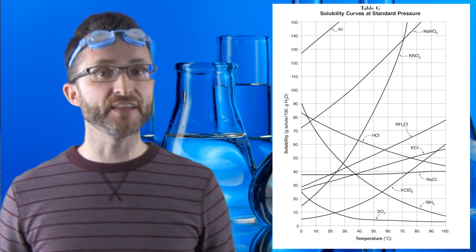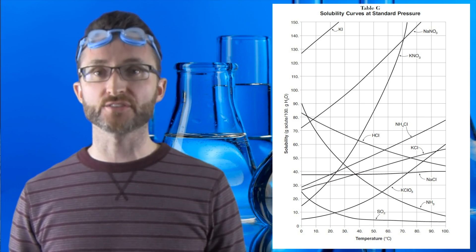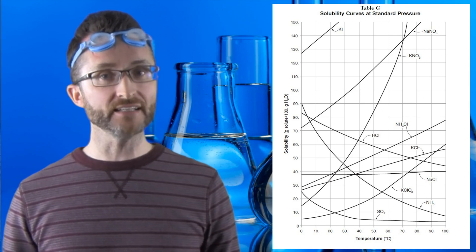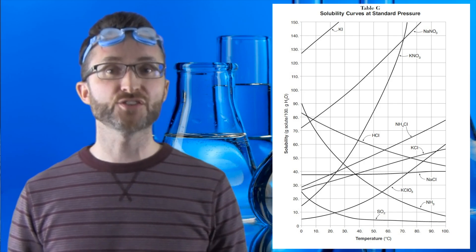If you find that the amount dissolved is on the line on table G, you have a saturated solution. If you are below the line, the solution is unsaturated, and above the line is supersaturated.